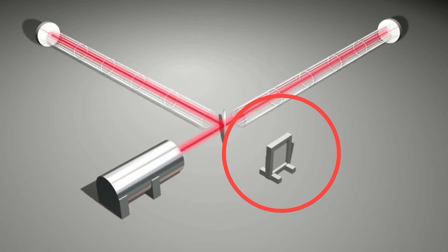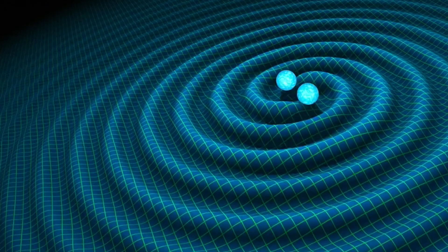Those two beams should arrive simultaneously because those two mirrors are the exact same distance away from the mirror in the middle. But when those two beams don't hit the light detector at the same time, that means you have just detected a gravitational wave. Isn't that awesome?